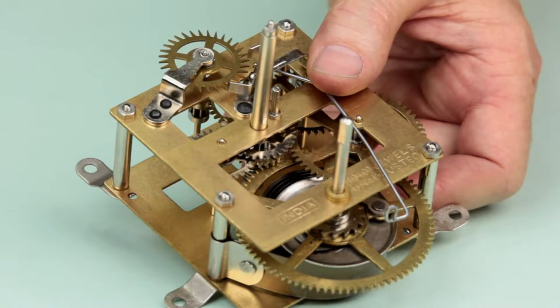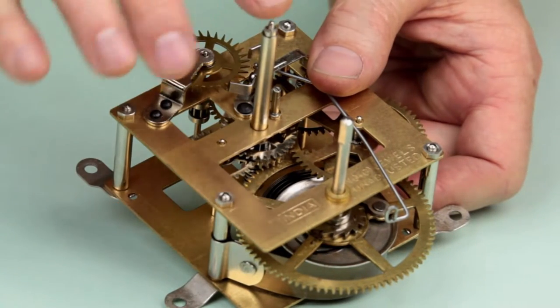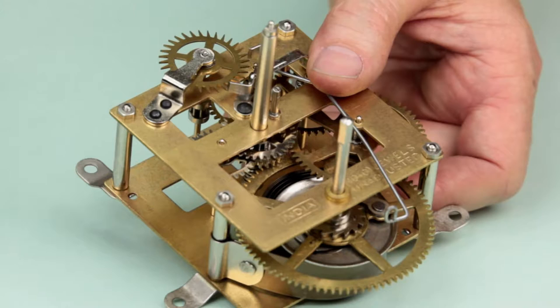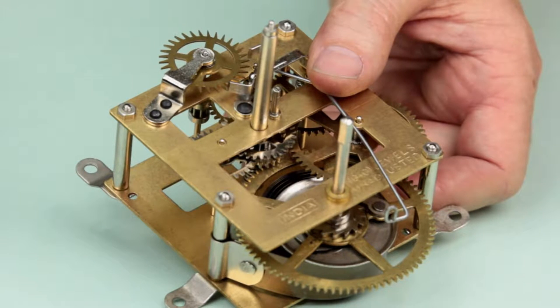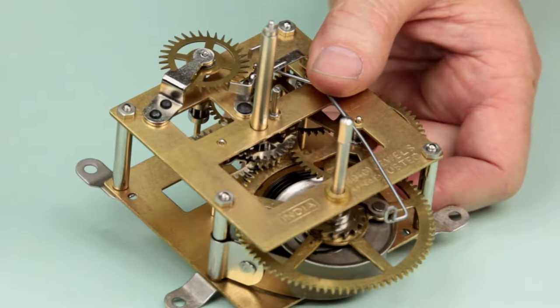It's usually located in the center of the movement and is called the center arbor. It's often the longest shaft coming out of the front of the movement as it has to poke through the center of the clock dial and hold the clock hands without rubbing on anything.